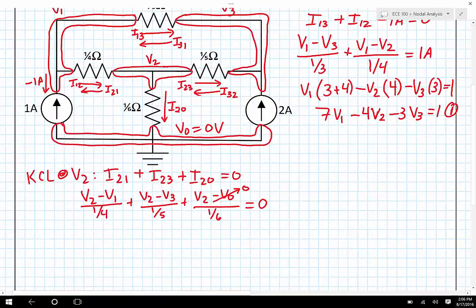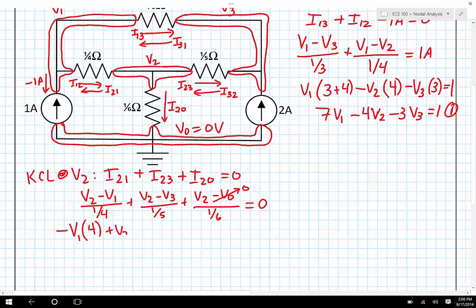So now I'm going to write this as V1, or it'll be minus V1 times 4, plus V2 times 4, plus 5, plus 6, minus V3 times 5. That's equal to zero, or I could rewrite this as minus 4 V1, plus 15 V2, minus 5 V3 is equal to zero. I'm going to call that equation two.